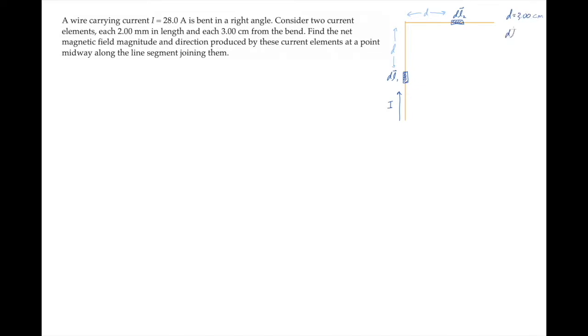We're asked to find the magnetic field produced by them at a point midway along the line joining the two current elements. So that's located here, where this distance r is the same for each of them. The net magnetic field at that point in the middle is the vector sum of the field produced by current element 1 and current element 2.